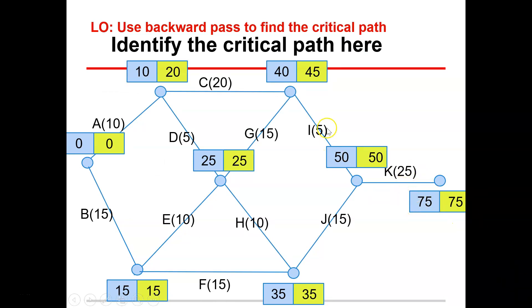and then... Oh wait, sorry, not I, because that doesn't give us the double numbers. It would be K to J to H to E to B would be your critical path for that one.